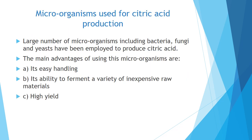The microorganisms used for citric acid production can be bacteria, fungi, and yeast. Fungi are known to produce citric acid in large amounts compared to bacteria and yeast. The main advantages of using microorganisms for industrial production are: they are easy to handle, they can ferment a variety of inexpensive raw materials, and they give a high yield compared to other processes.